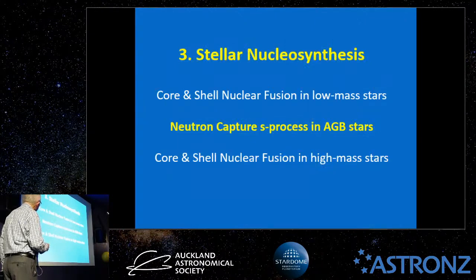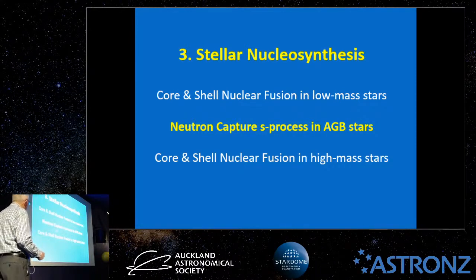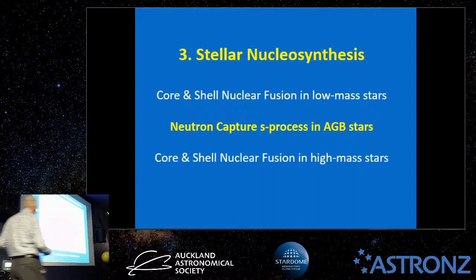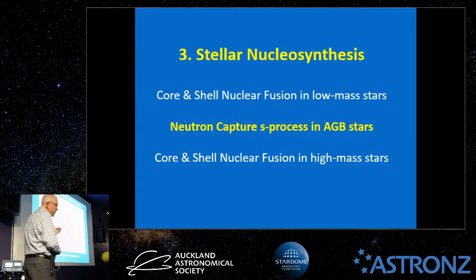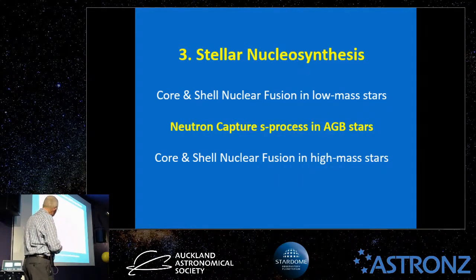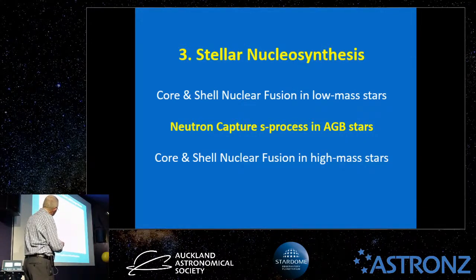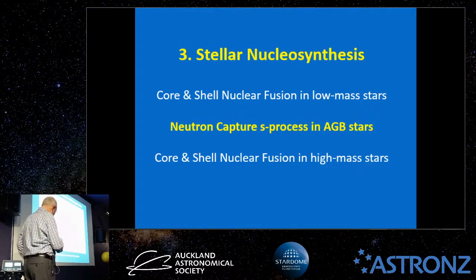On the Hertzsprung-Russell diagram, low-to-medium-mass stars (up to 8 solar masses) proceed through the red giant phase as helium burns, and when helium runs out they enter the asymptotic giant branch (AGB) phase. The AGB has an early and a late phase.